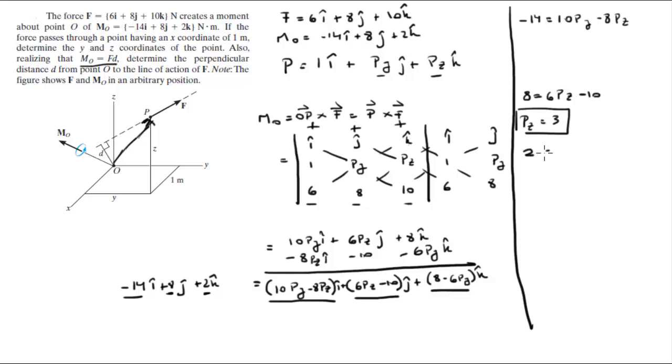And the last one is 2 is equal to 8 minus 6py. So you subtract 8 from both sides, you divide by negative 6, and you get that py is equal to positive 1.